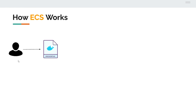Now, how does ECS work from a user perspective? It all starts with you defining a Dockerfile. A Dockerfile essentially contains settings: the operating system you want to run on, any dependencies you'll need, all the source code for your image, and scripts you want to run on startup. You build this Dockerfile — it's basically a text file in a special format — into an image and upload it to ECR, which stands for Elastic Container Repository.